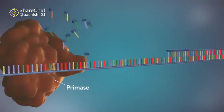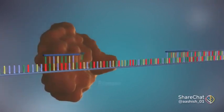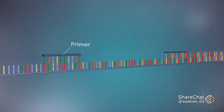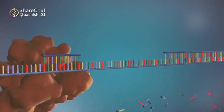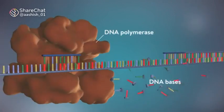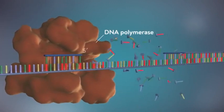Each fragment is started with an RNA primer. DNA polymerase then adds a short row of DNA bases in the 5' to 3' direction.